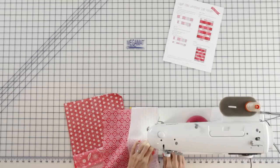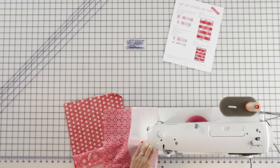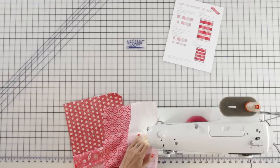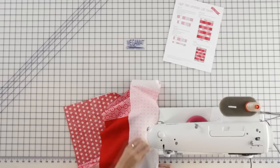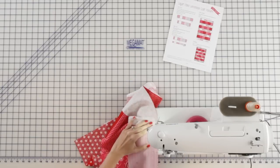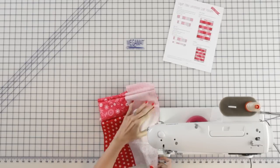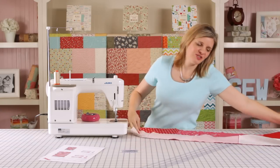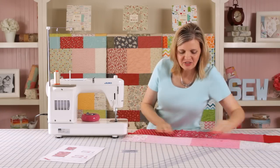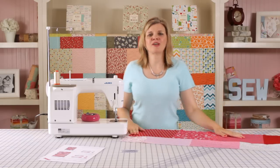Now as you come up to a pin, you're going to remove your pin so you don't sew over it. So now you've got your first two quilt rows together. And you're going to continue sewing until your quilt top is complete.